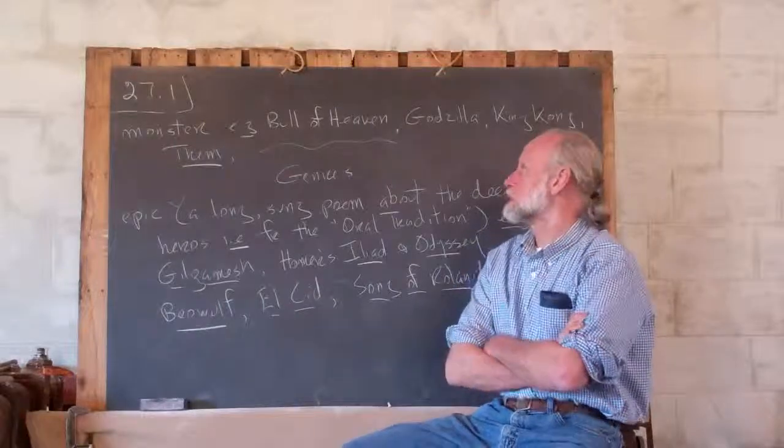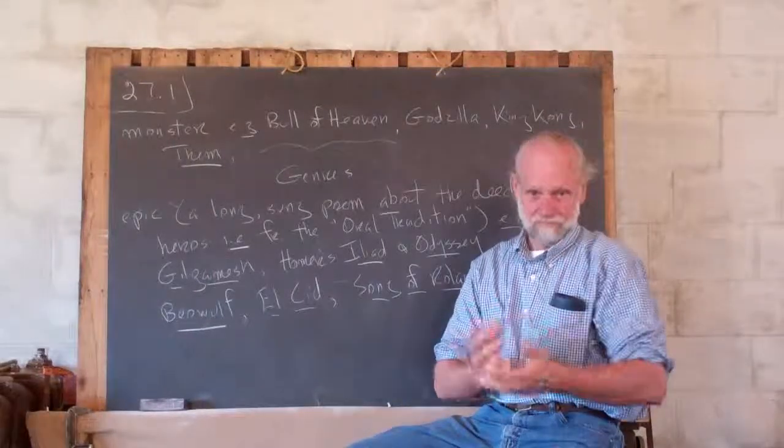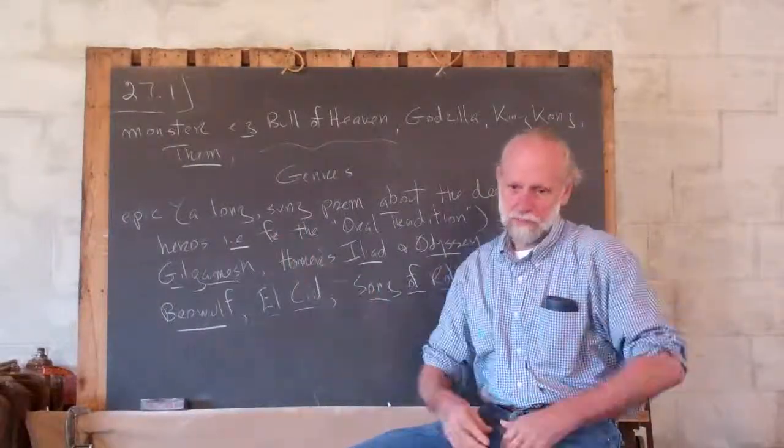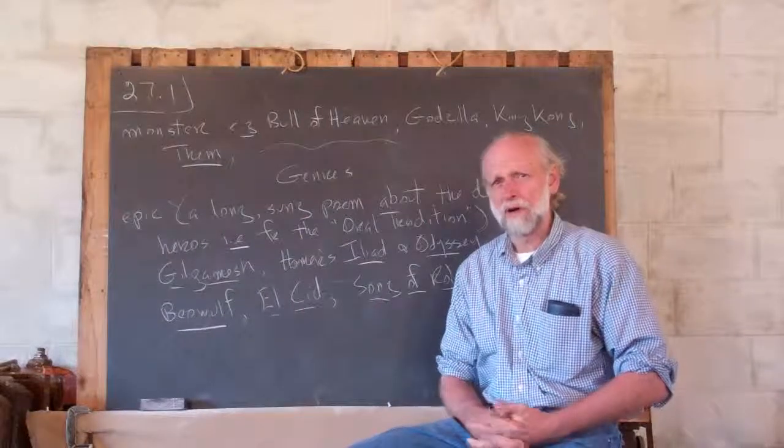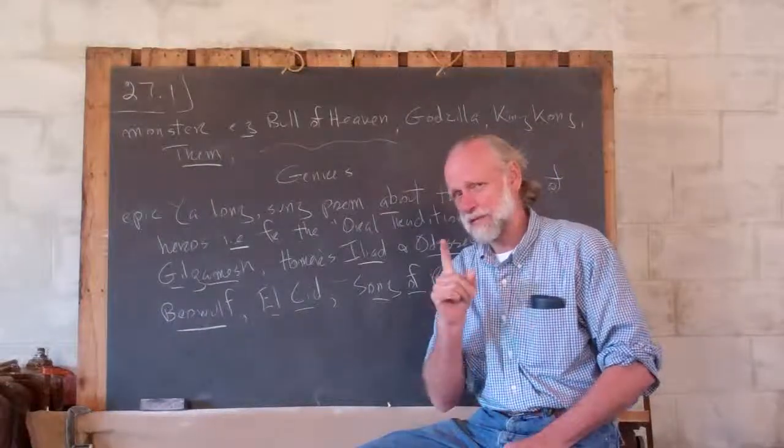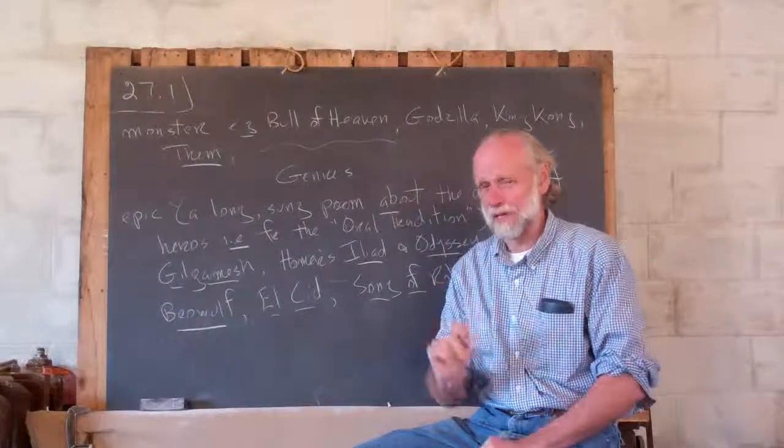It means for example. Well, Bull of Heaven is a monster, huge, killed a hundred men at a blast from his nostrils. Monsters. You could maybe regard Humbaba as a monster, but I think it's better to think of Humbaba as a guardian. I think it's more useful.